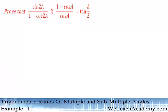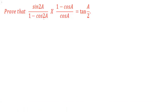Hey guys, welcome to VDG Academy. In this presentation we are going to discuss an example: prove that sin 2a divided by 1 minus cos 2a, into 1 minus cos a divided by cos a, is equal to tan a by 2.